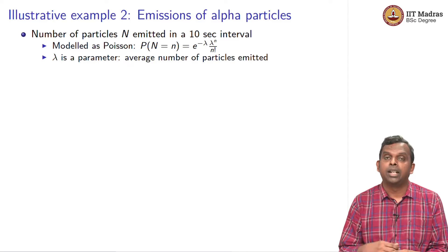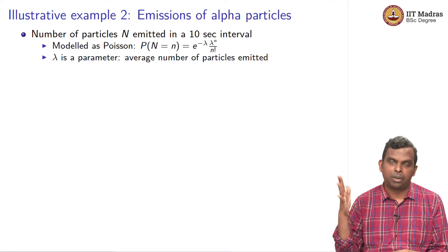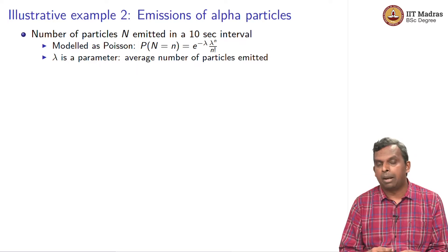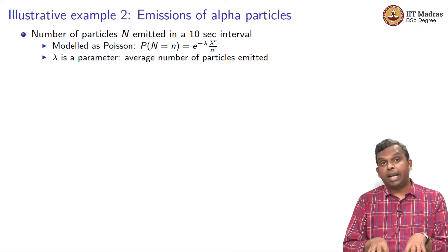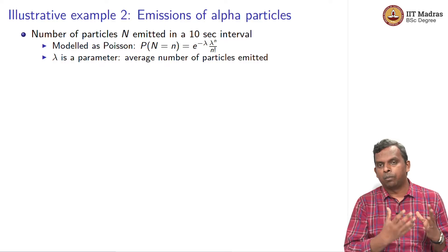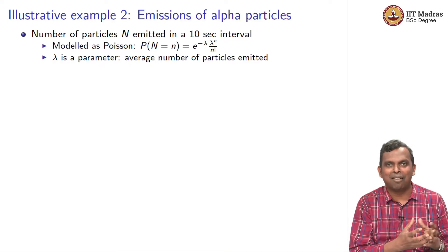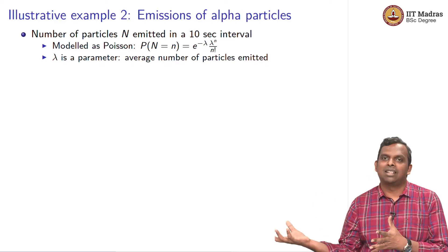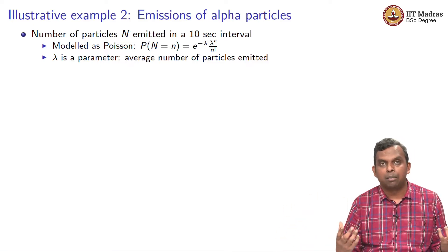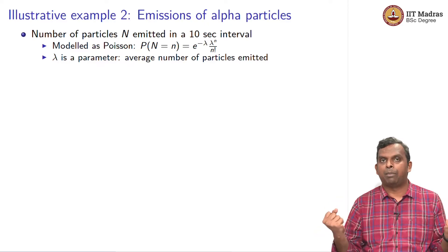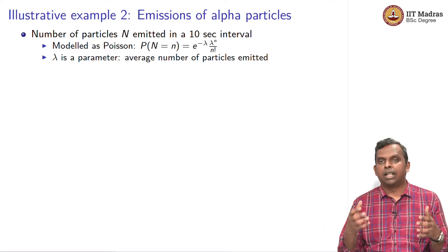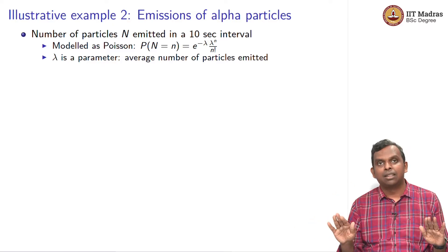We know the Poisson distribution well — it could be 0 particles, 1, 2, 3, 4, and so on. The probability that n particles are emitted in a 10-second interval is e to the minus lambda, times lambda to the n, divided by n factorial. Now, depending on the actual radioactive substance, this lambda may vary. One type of uranium may have one lambda, some plutonium may have another. The lambda varies from one radioactive substance to another, but the model remains the same. So lambda is an unknown parameter of the distribution.